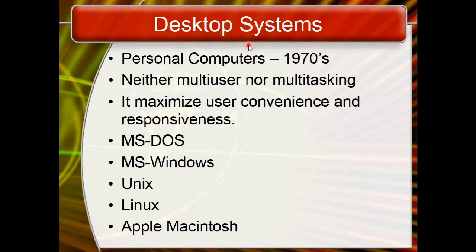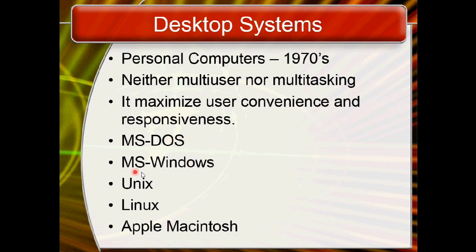The next kind of system is the desktop system, normally used as a personal computer. Personal computers focus on maximizing user convenience and responsiveness. Some examples of operating systems used on personal computers are MS-DOS, Windows, Unix, Linux, Apple, and Macintosh.